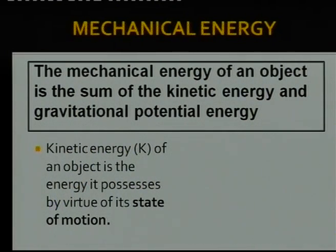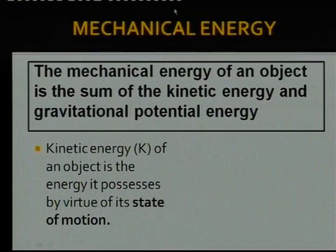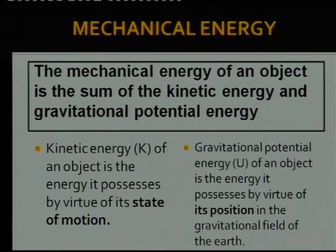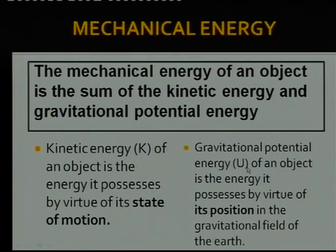From Grade 10, kinetic energy of an object — I am going to use the symbol K. You can use various symbols: EK or K for kinetic energy. In the rest of the slides I will just refer to kinetic energy as K. Kinetic energy of an object is the energy it possesses by virtue of its state of motion, so anything that moves has kinetic energy. For gravitational potential energy, the symbol I will use is U — you can also use GPE or EP, but for convenience I will use just U.